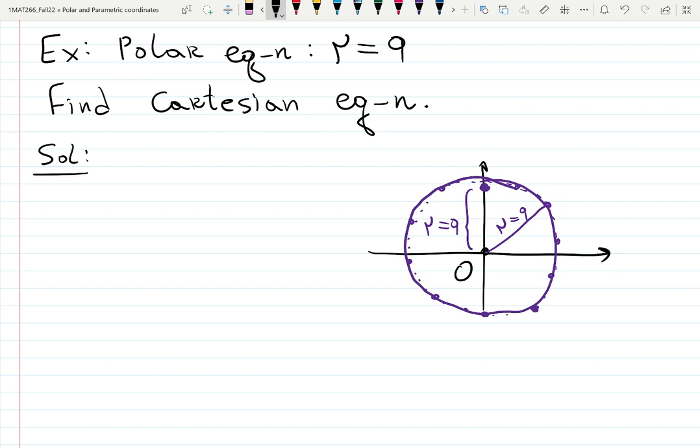Very interesting. So with a fixed height, with a fixed distance away from the pole, but no fixed angle, you have all the possible opportunities that creates a circle. Let's prove that.